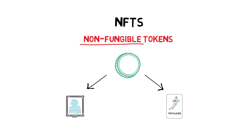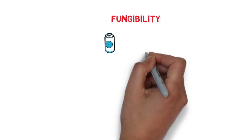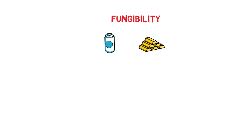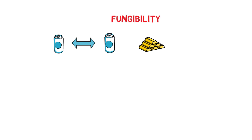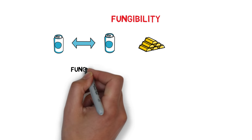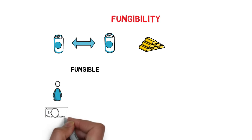Non-fungible is not a very popular word, so let's see what it really means. In economics, fungibility is the characteristic of goods or commodities where each individual unit is interchangeable and indistinguishable from each other. Fungibility is best explained with an example. Fiat money such as the US dollar is a good example of something fungible.